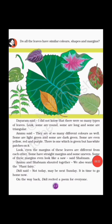After collecting leaves, the children started discussing about the shapes, colours, and margins of leaves. Dayaram said, 'I did not know there were so many types of leaves. Look, some are round, some are long, and some are triangular.' Ammu said, 'There are so many different colours as well. Some are light green and some are dark green. Some are even yellow, red, and purple. There is one which is green but has white patches on it.'